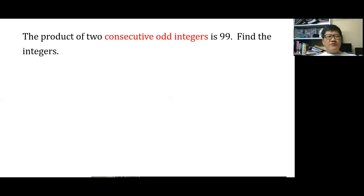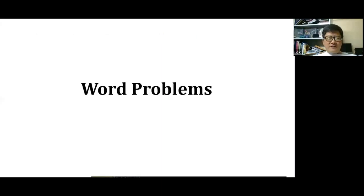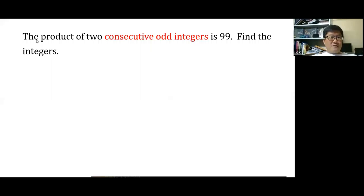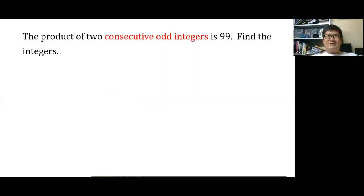The first word problem: the product of two consecutive odd integers is 99. Find the integers. You have to form the equation from the words — there are no equations given. You're looking for consecutive odd integers whose product is 99.